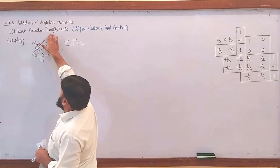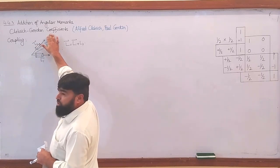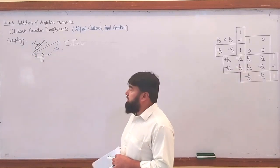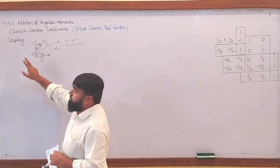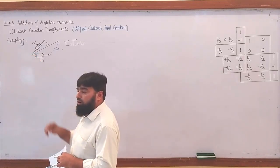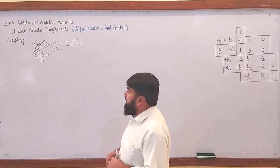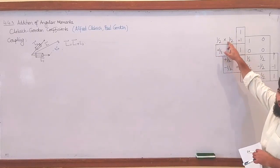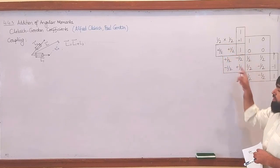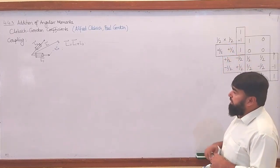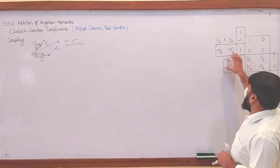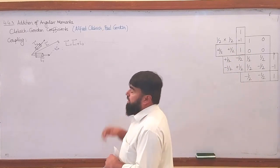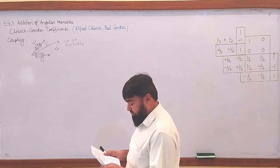The Clebsch-Gordan coefficients are the coefficients which we get as a result of the coupling of the two spins. We consider the hydrogen atom first, where we consider the spin of the electron and the spin of the proton — the electronic spin and the nuclear spin — having the half-half spin combination. We will derive such a table and discuss other tables as well. This is the collection of the Clebsch-Gordan coefficients.